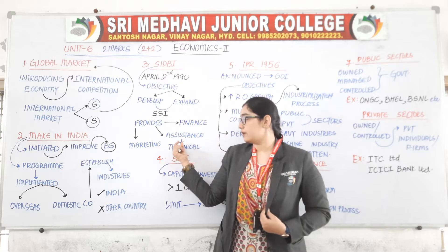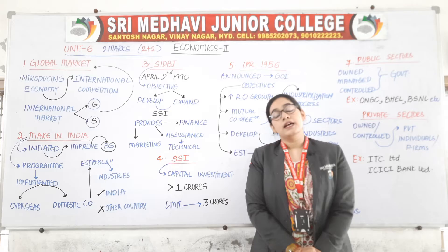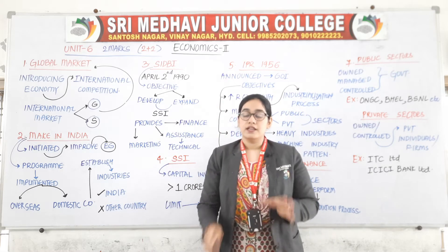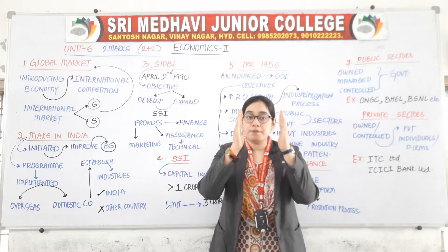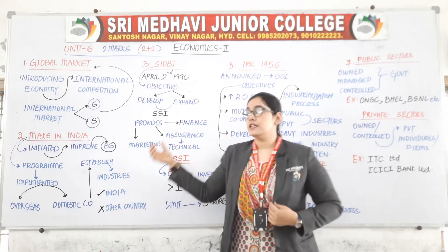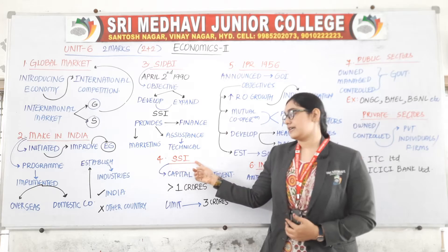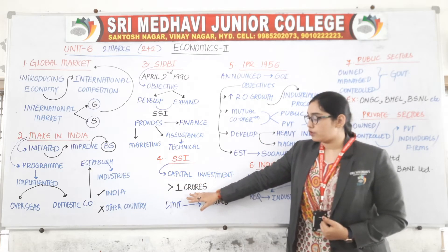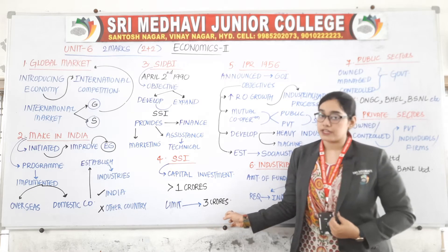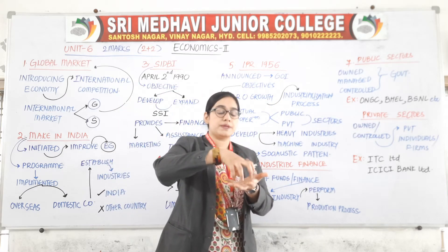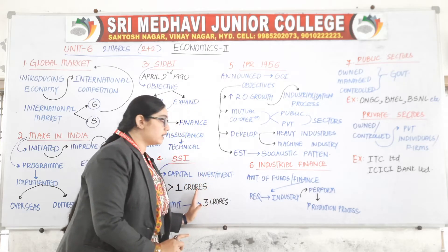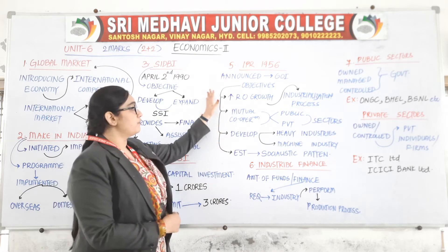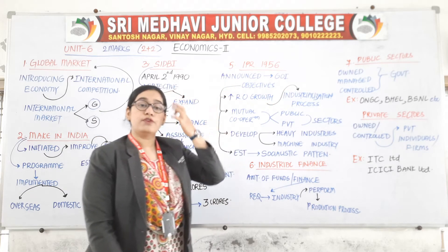The third question is SIDBI — Small Industries Development Bank of India. The word itself says we need to develop small industries. It was started on April 2nd, 1990, with an objective to develop as well as expand the small scale industry. There are various kinds of industries: small industries, tiny industries, cottage industries, large industries, and mega industries. Among all these, SIDBI focuses on the development and expansion of small scale industries. It provides finance, marketing, and technical assistance to small scale industries.